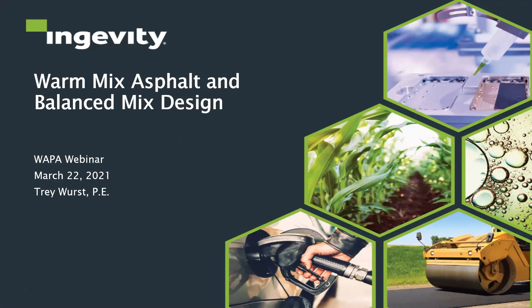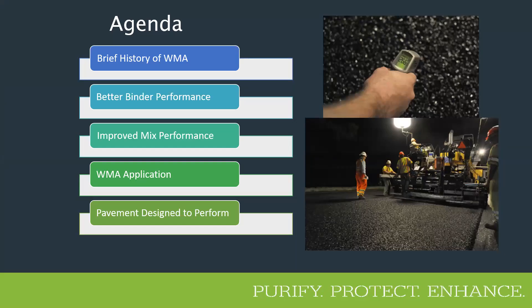Sorry for the technical difficulties. I vetted all this out earlier and the computer decided to not work, but I appreciate everybody joining today to talk about some of the work that we've done here at Longevity — looking at how warm mix asphalt can be incorporated into balanced mix design and really what the value of low temperature is, or making mixes at lower temperatures. We'll start with a brief history of warm mix, then go to what we call a three or four pillar approach: talking about binder performance at lower temperatures, mix performance at lower temperatures, some application stuff, and then how that's incorporated into pavement design.